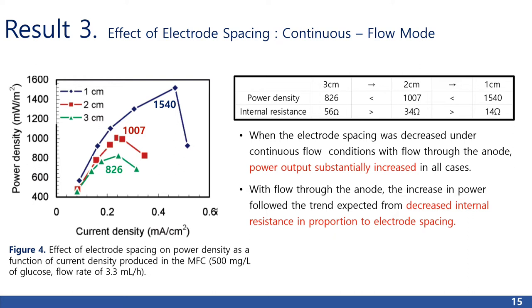Result 3 — Effect of electrode spacing, continuous flow mode: when the electrode spacing was decreased under continuous flow conditions with flow through the anode, power output substantially increased in all cases. With flow through the anode, the increase in power followed the trend expected from decreased internal resistance in proportion to electrode spacing. At an electrode spacing of 3 cm, the maximum power density was 826 mW per meter square. The maximum power increased to 1,007 mW per meter square at 2 cm spacing and further increased to 1,540 mW per meter square at 1 cm electrode spacing, resulting in an overall increase in power of 86% relative to the 3 cm spacing condition.